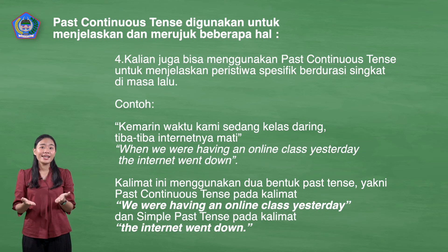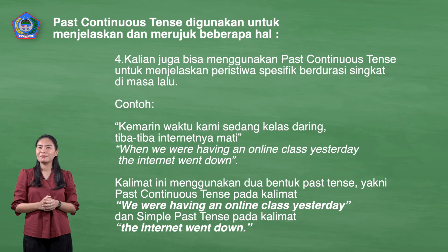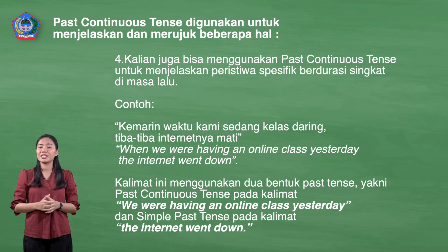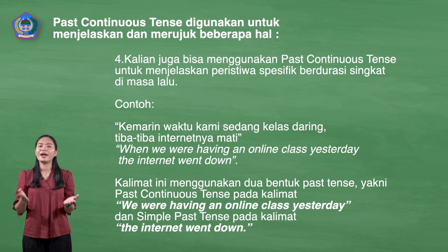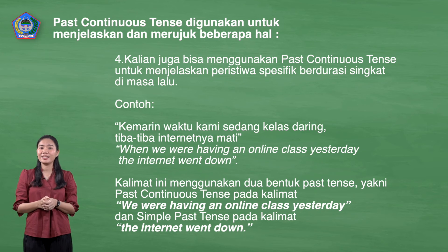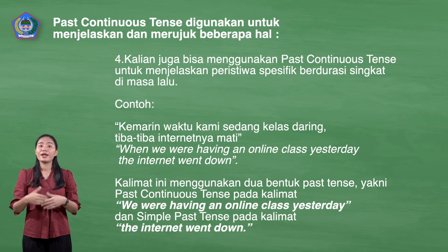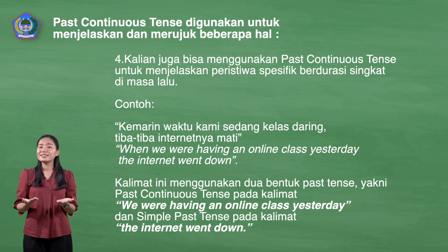Yang keempat, kalian juga bisa menggunakan past continuous tense untuk menjelaskan peristiwa spesifik berdurasi singkat di masa lalu. Kita sering menggunakan kalimat yang menyatakan dua kejadian sekaligus di masa lalu. Misalnya, kemarin waktu kami sedang kelas daring, tiba-tiba internetnya mati. You can say: When we were having an online class yesterday, the internet went down. Kalimat ini menggunakan dua bentuk past tense, yakni past continuous tense pada kalimat 'We were having an online class yesterday,' dan simple past tense pada kalimat 'the internet went down.'